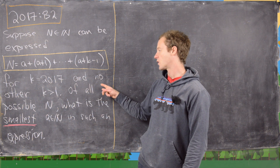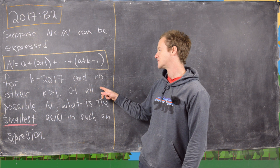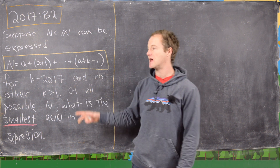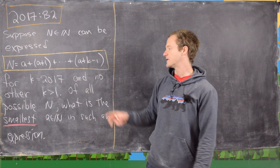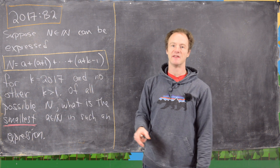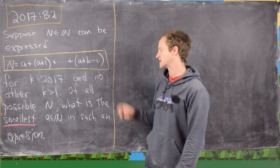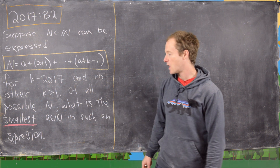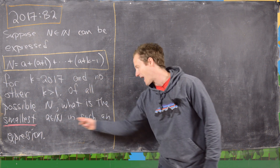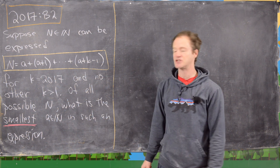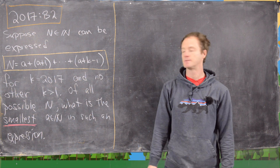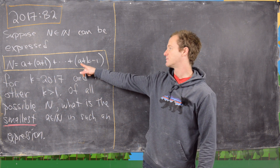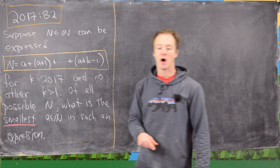The question we want to answer is: of all possible n — maybe there's a bunch of n that satisfy this condition — what is the smallest number a in such an expression? So what's the smallest that a can be?